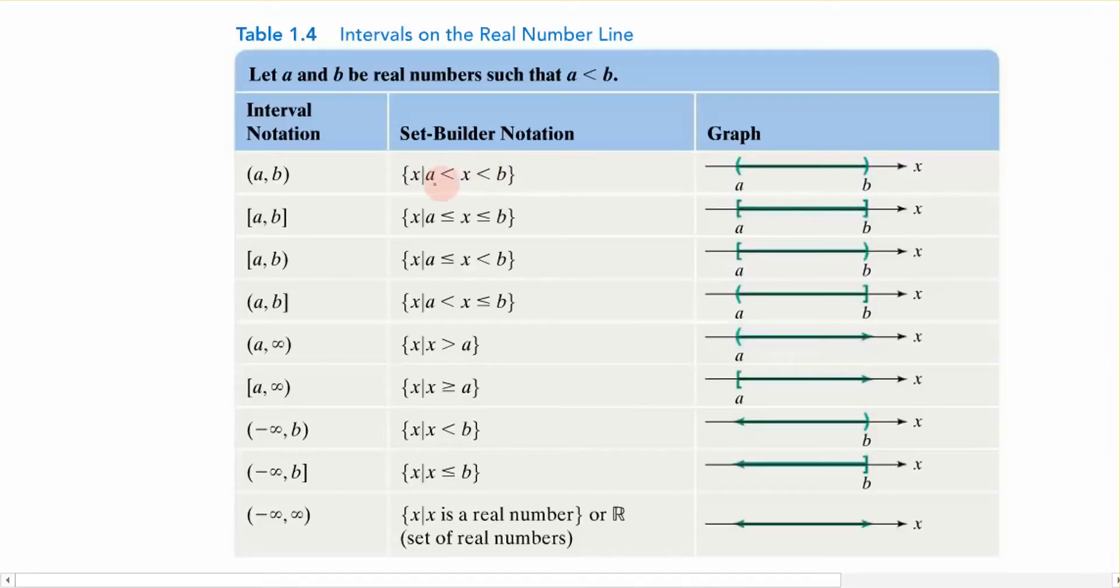So the set builder notation is always given with brackets, like set brackets, and it reads as x such that, that's what that bar means, x such that x is greater than a but less than b. And that's what the interval notation states here, that my variable x is greater than a but less than b. In other words, it's in between my a and my b, but it does not include a and b.